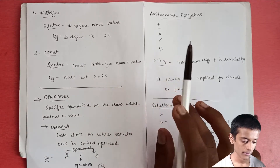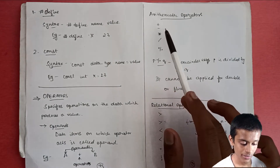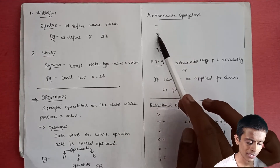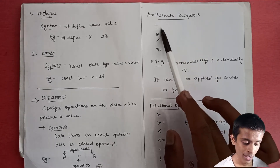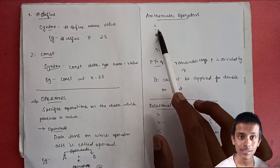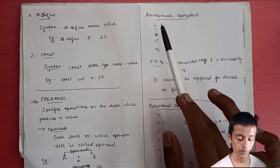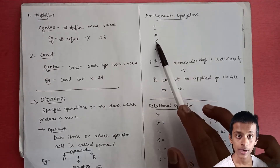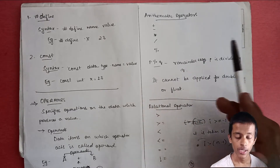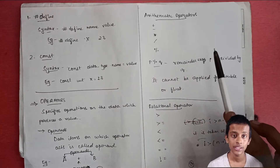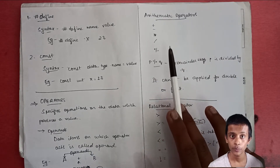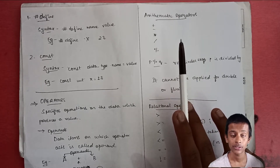Let's look at the arithmetic operators: plus, minus, multiply, divide, and modulus. Plus is the addition operator — it gives you the sum as output. Minus is the subtraction operator. Multiply multiplies two variables. Divide divides two variables. The modulus operator, used in an expression like 'p % q', gives you the remainder. If p exactly divides q, the remainder is zero. Note that the modulus operator cannot be applied to float or double data types.